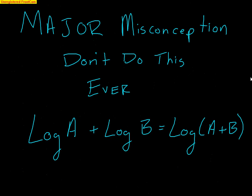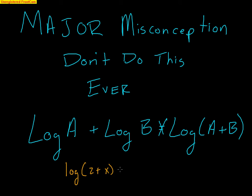Be careful — this is a major misconception. Some students think that log of a plus log of b can be written as log of (a plus b). That is 100% false. The property states that log of a plus log of b equals log of a times b, not a plus b. In fact, if you end up with log of (2 plus x), there's nothing you can do — that is at its final result, because we have no property that allows us to break apart addition inside of a log.